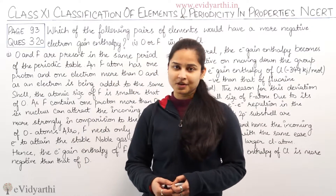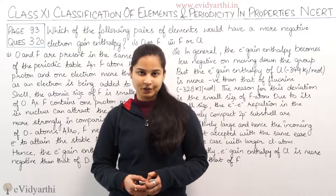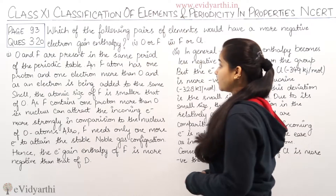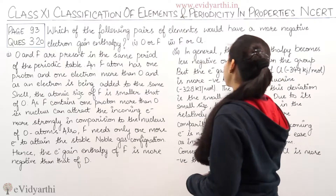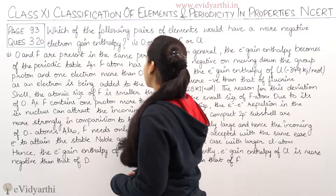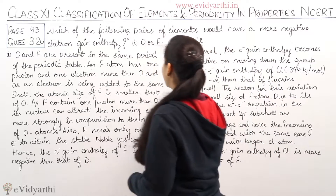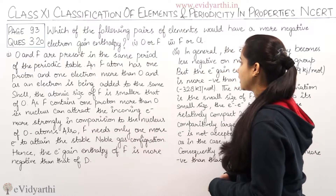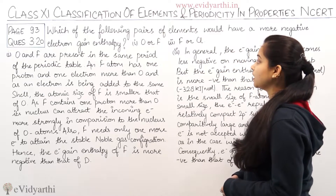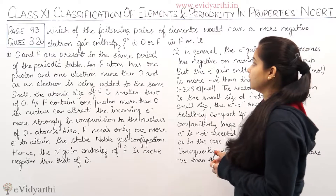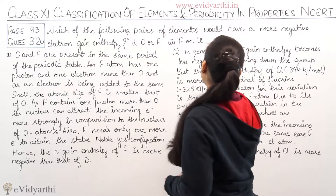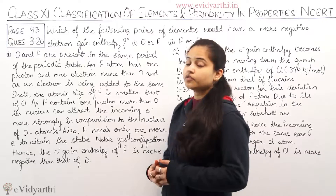The question asks: which of the following pairs of elements would have a more negative electron gain enthalpy? Part 1: oxygen or fluorine. Part 2: fluorine or chlorine.